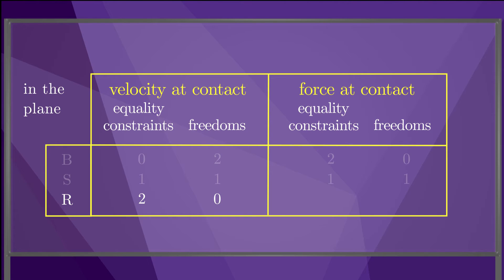Referring again to our table, the zero relative velocity at the contact means two constraints and zero freedoms for the relative velocity. The contact force has zero equality constraints and two freedoms.